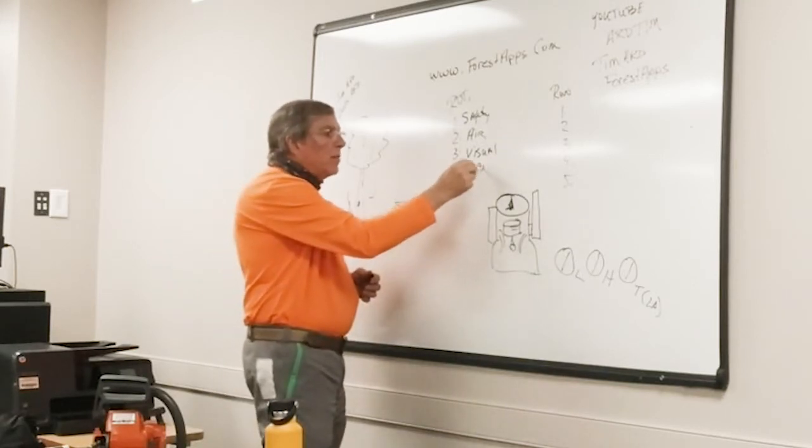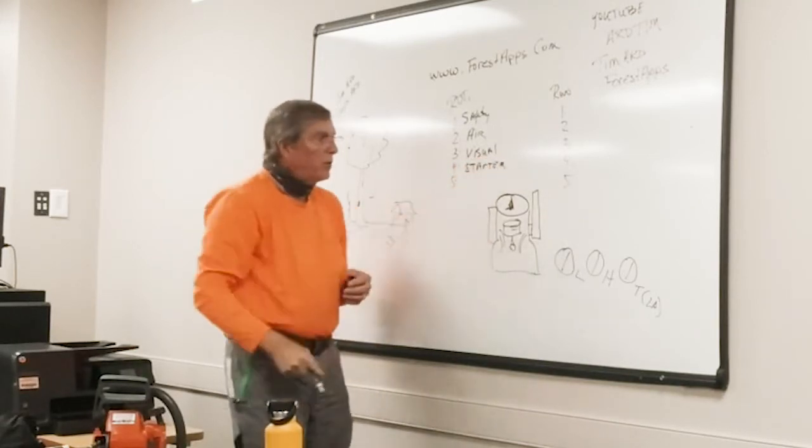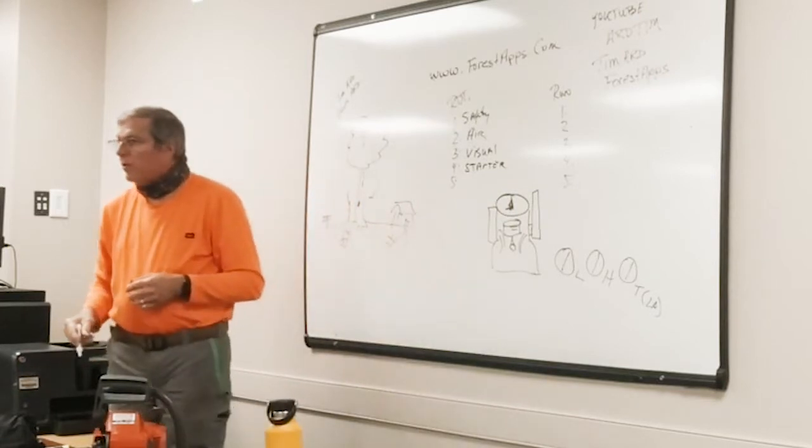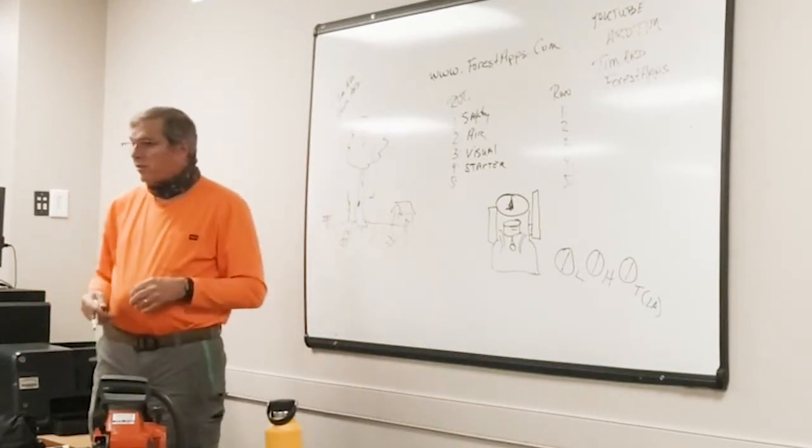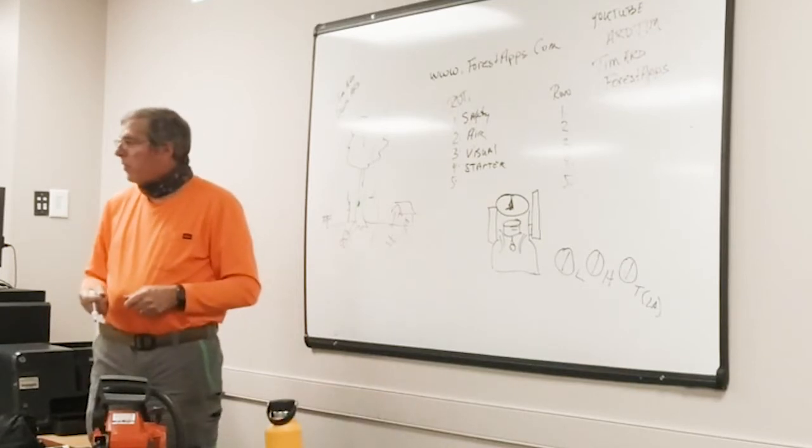Number four is starter. If you don't check out the starter rope before you go halfway across the county, you can end up with it coming off. And then you got to make a back trip, but you can't push start a chainsaw.